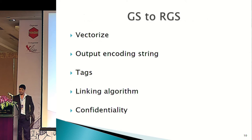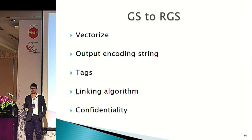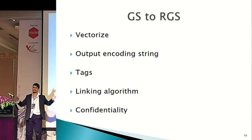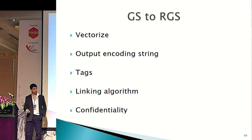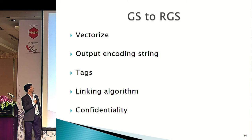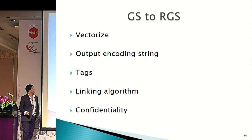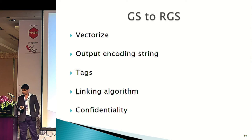How do we actually get a reactive gobbling scheme? Basically, we take a gobbling scheme and expand the definition. We're going to do a couple of things. First, we'll vectorize — instead of having one input, we'll have a vector of inputs, and the same thing for outputs: a vector of outputs.